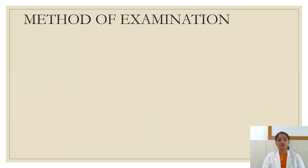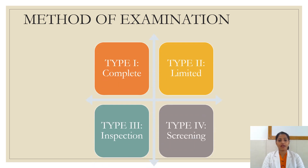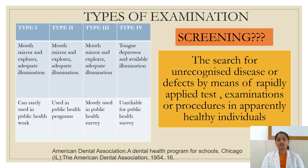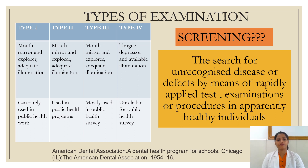There are four methods of examination: Type 1, also called complete examination; Type 2, limited examination; Type 3, inspection; and Type 4, screening. Most commonly used types are Type 3 and Type 4 when it comes to surveys. Screening is the search for unrecognized disease or defects by means of rapidly applied tests, examinations, or procedures in apparently healthy individuals.